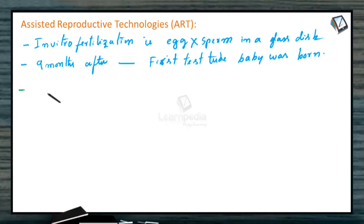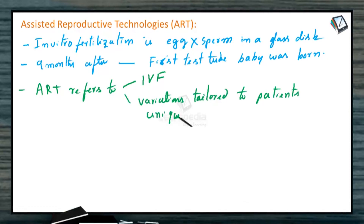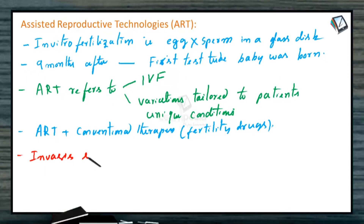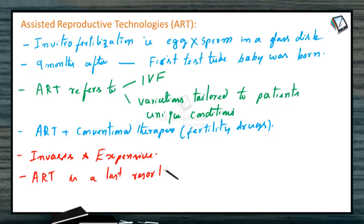Today, Assisted Reproductive Technology, that is ART, refers not only to IVF — in vitro fertilization — but also to several variations tailored to patients' unique conditions. These procedures are usually paired with conventional therapies such as fertility drugs to increase the success rate, and almost one out of every three cycles of ART results in the birth of a baby. However, ART procedures are invasive as well as expensive, and though no long-term health effects have been linked to children born using ART, it is recommended as a last resort for having a baby.